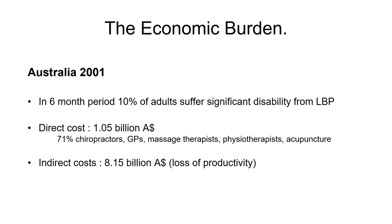However, the economic burden is massive. Although it's extremely old data, Australia reported that in a six-month period, ten percent of adults suffered significant disability from back pain, with costs in the order of one billion Australian dollars, mostly spent on chiropractors, GPs, and other primary therapists. But taking into account the loss of work productivity, the cost can be seen around eight billion Aussie dollars a year.